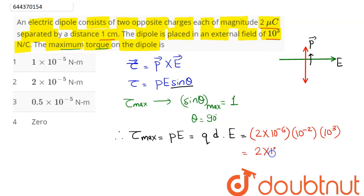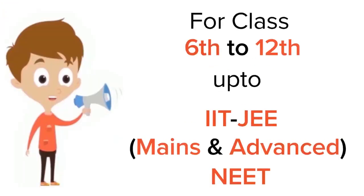On calculation, this comes here as 2 × 10^-5 newton meter, as this is the maximum torque acting on the dipole, which here is option number 2. Hence 2 is the correct answer.